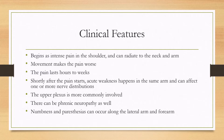For clinical features, it typically begins acutely with intense pain in the shoulder which can radiate to the neck and arm. Most of the time it's unilateral, but sometimes it can be bilateral. Movement typically makes the pain worse, and the pain is constant, lasting hours to weeks.